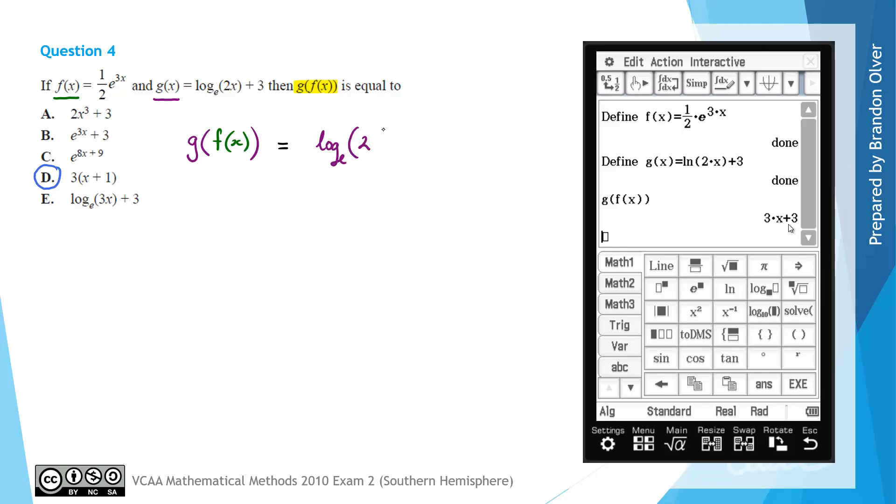But we're now going to put in here a half e to the power of 3x. And then there's still a plus 3 at the end. And then we just need to simplify this as much as possible.